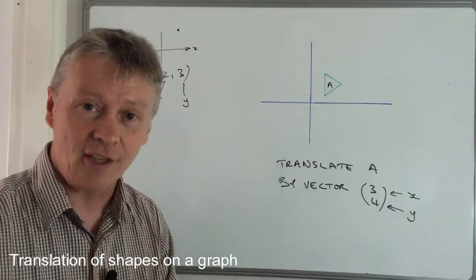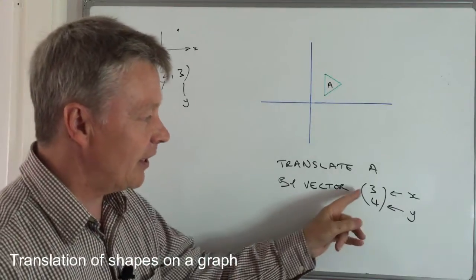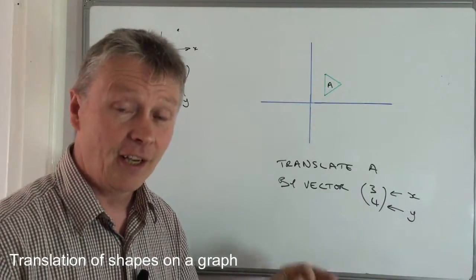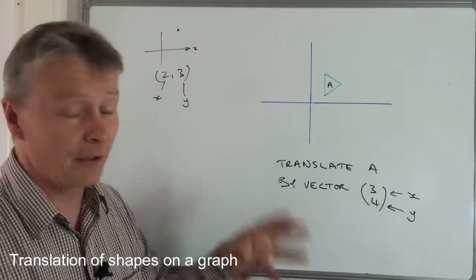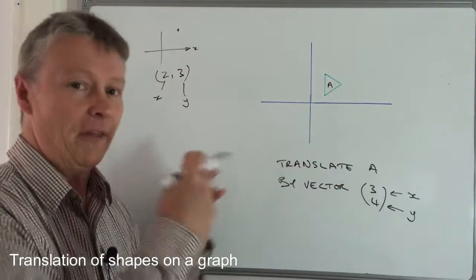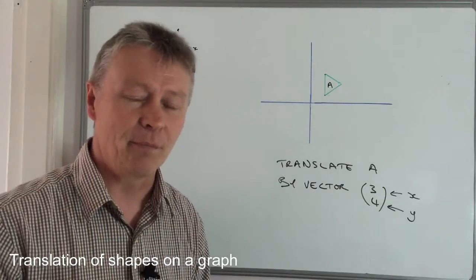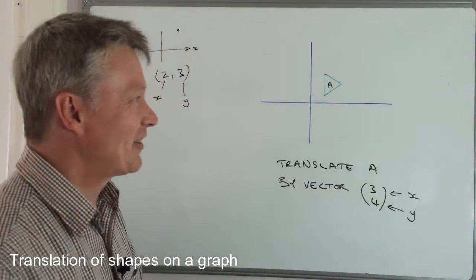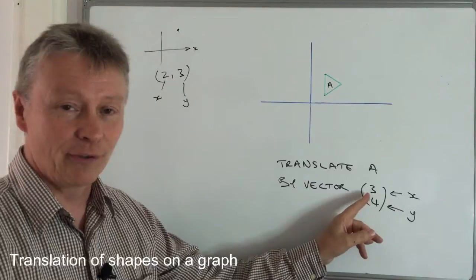Okay, now, the only slight difficulty with that is occasionally you get these numbers which are negative. If they are negative, I'm going to give you an example of that in the next video. But basically, you move them in the opposite direction, and you'll see what I mean in the next video. Okay, so let's just do this example very briefly.